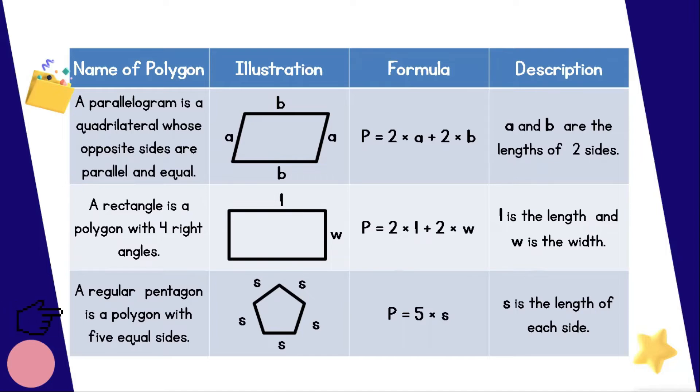And last example is a regular pentagon. This is a polygon with 5 equal sides. For its perimeter's formula, we can use 5 times S, where S is the length of each side.